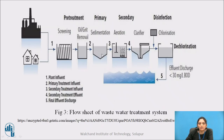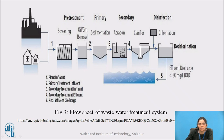Let's see the treatment of wastewater. This is a flow chart of treatment of wastewater. First, it is collected from the residential area as well as the industrial area. Then, before treatment, it must be pre-treated. The first unit of pre-treatment is the screening chamber. In the screening chamber, removal of insoluble floating material takes place — such as water bottles and plastic bags, which are removed from the water.